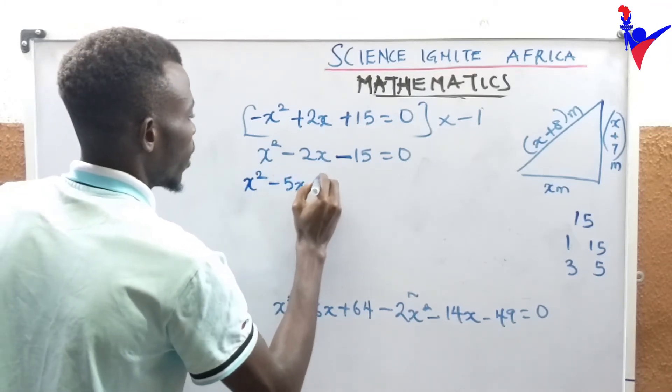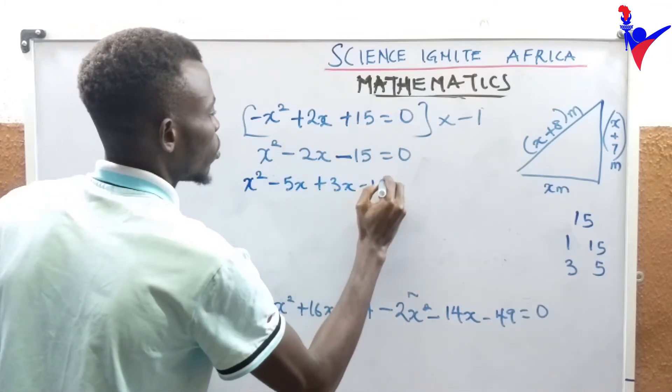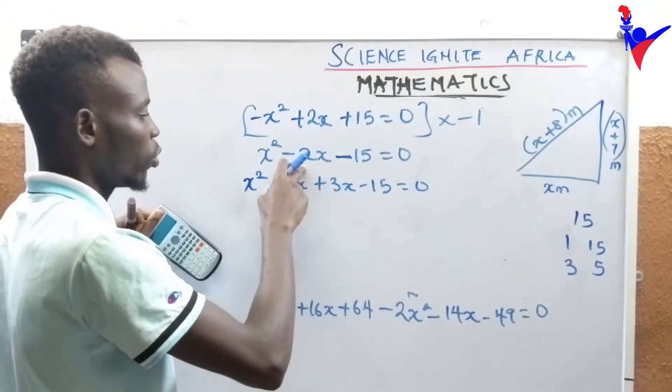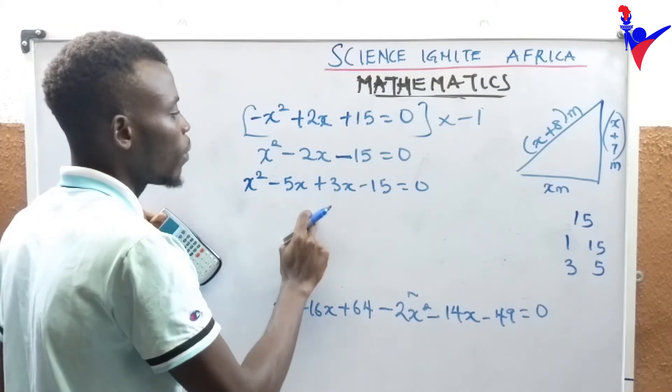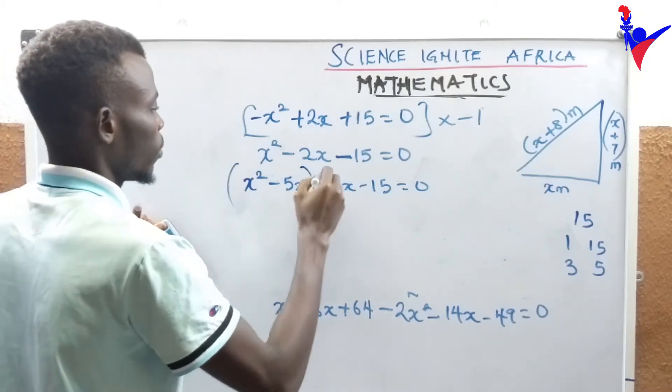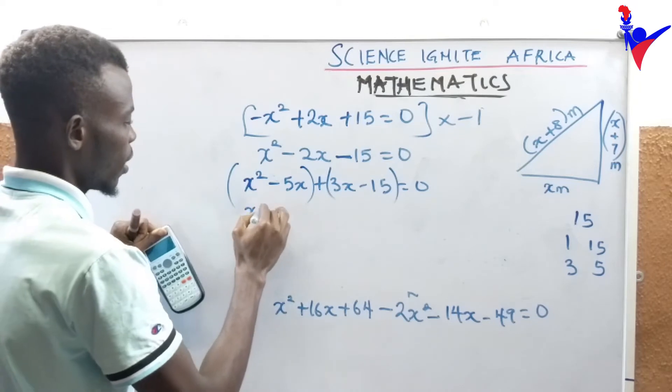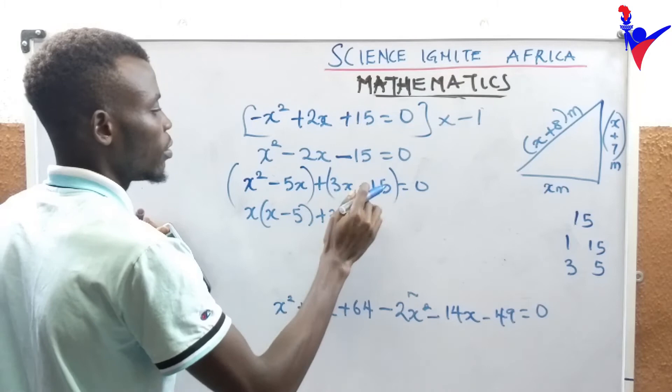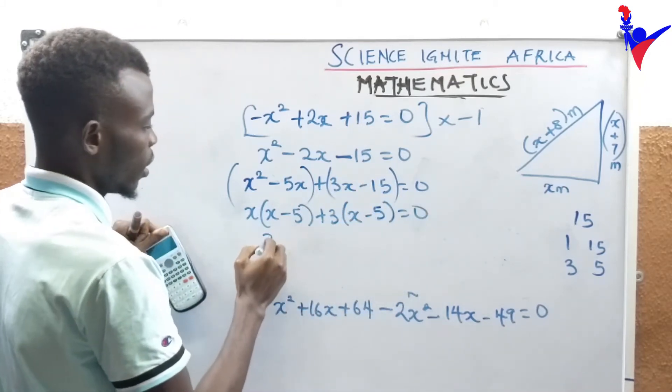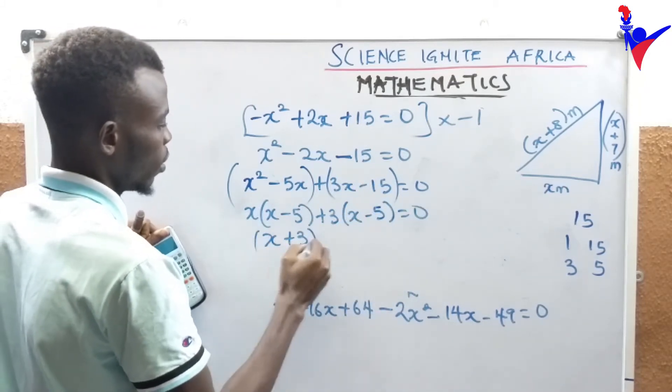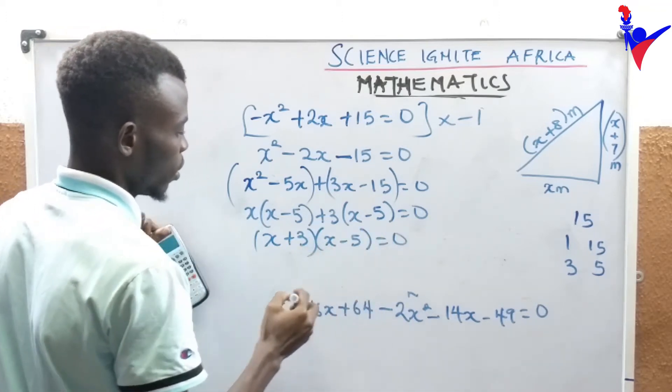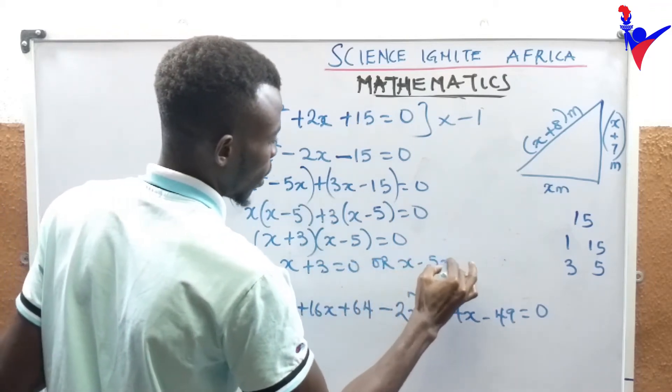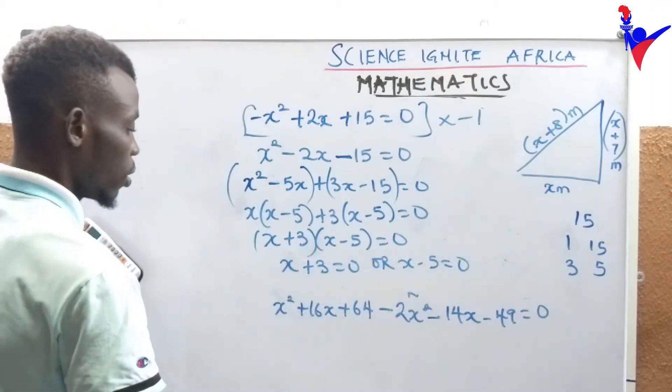We have x squared minus 5x plus 3x minus 15 equals 0. Minus 5 plus 3 is minus 2. Minus 5 multiplied by plus 3 gives us minus 15. Then we have x into x minus 5 plus 3 into x minus 5 equals 0. Then we have x plus 3 times x minus 5 equals 0. x plus 3 equals 0, x minus 5 equals 0.